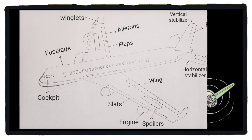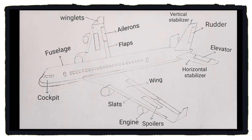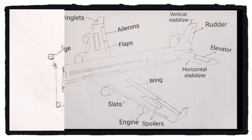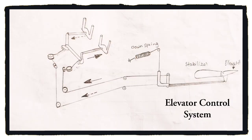Elevator. These are located at the tail part or empennage section of an aircraft on the horizontal stabilizer. These help to move the aircraft around the lateral axis, i.e. pitching. They are operated with the help of forward or backward movement of the control stick.